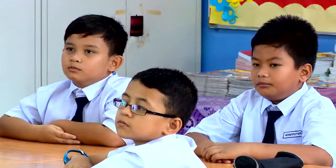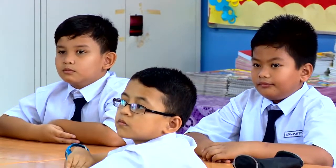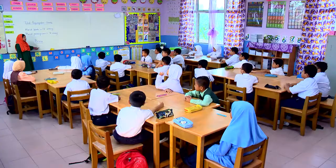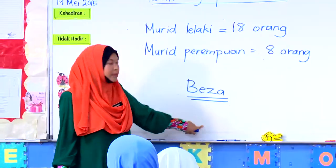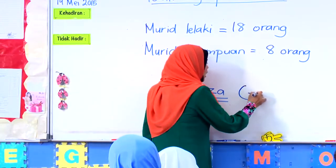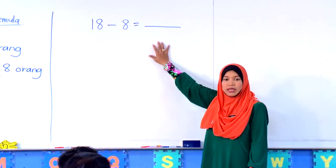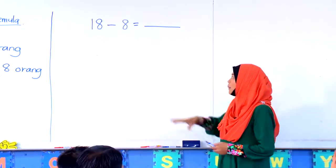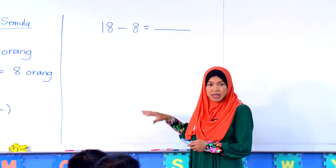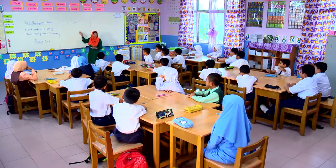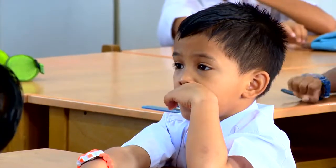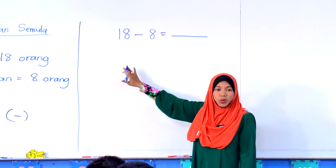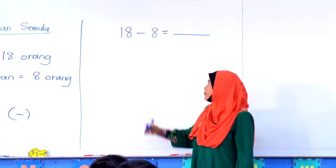Untuk itu, sekarang ini saya nak cari berapa beza. Beza — apa operasi dia? Tolak. Untuk tukarkan kepada bentuk lazim, kamu perlu tahu macam mana cara kamu kena tahu dia punya kedudukan nilai tempat. Dari sini saya akan lukiskan jadual nilai tempat.